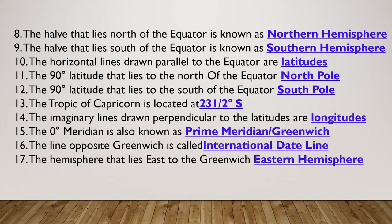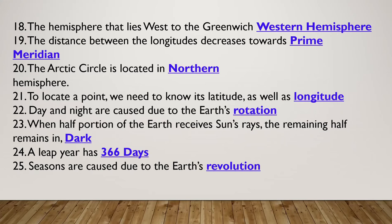The zero meridian is also known as the Prime Meridian or Greenwich Meridian. The line at zero degrees longitude is called the Prime Meridian. The line exactly opposite to Greenwich - at 180 degrees - is called the International Date Line. The hemisphere that lies east of the Greenwich Meridian is the Eastern Hemisphere, and the west side is the Western Hemisphere.